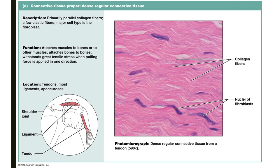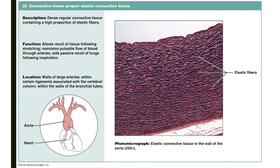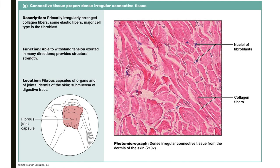Dense regular connective tissue is composed of parallel collagen fibers and fibroblasts — cells that create the extracellular matrix and fibers. This strong tissue makes up tendons and most ligaments, connecting bone to bone and muscle to bone. Elastic connective tissue contains mostly elastic fibers, allowing for recoil after stretching. Because of its strength and recoil, it is found in the walls of large arteries, vertebral ligaments, and within bronchial tubes. Dense irregular connective tissue is primarily comprised of irregularly arranged collagen fibers and fibroblasts. This strong tissue is able to withstand multi-directional tension, and is found within joints and in the dermis of the skin.